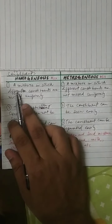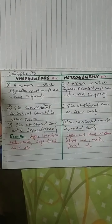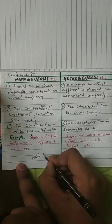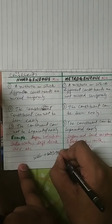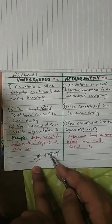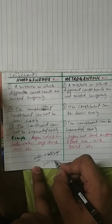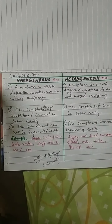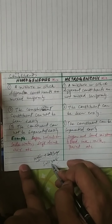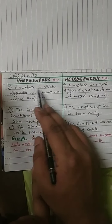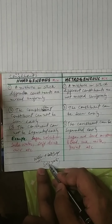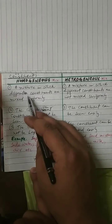A homogeneous mixture is a mixture in which different constituents are mixed uniformly. For example, if you mix water and salt or sugar, these two substances form a salt solution or sugar solution. The salt dissolves completely in water, and sugar also dissolves completely in water. This type of mixture is called homogeneous.